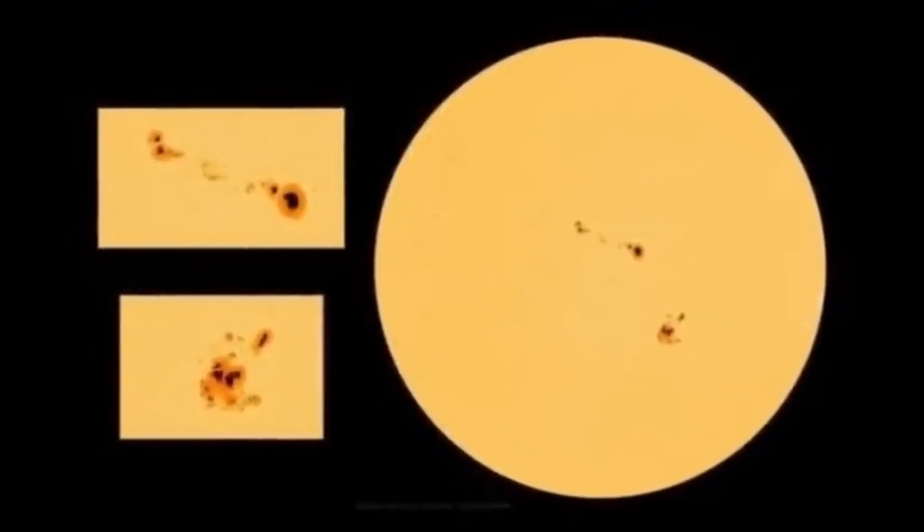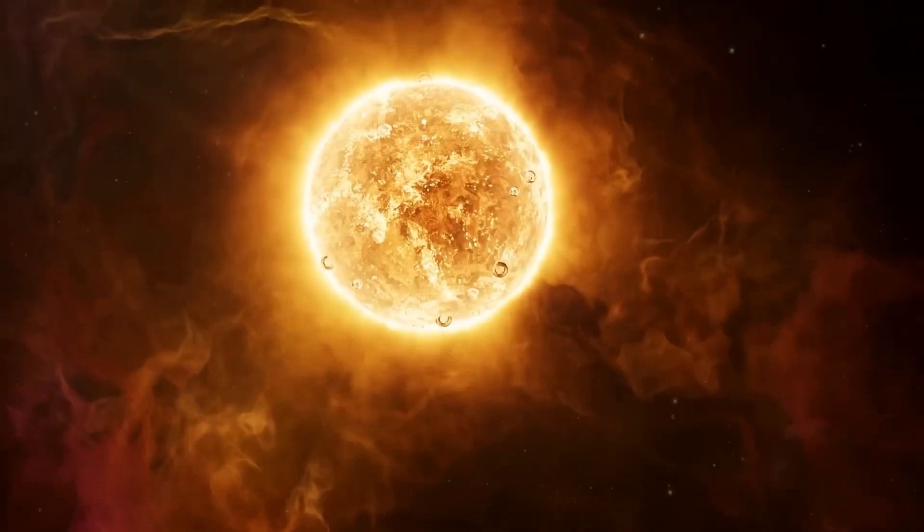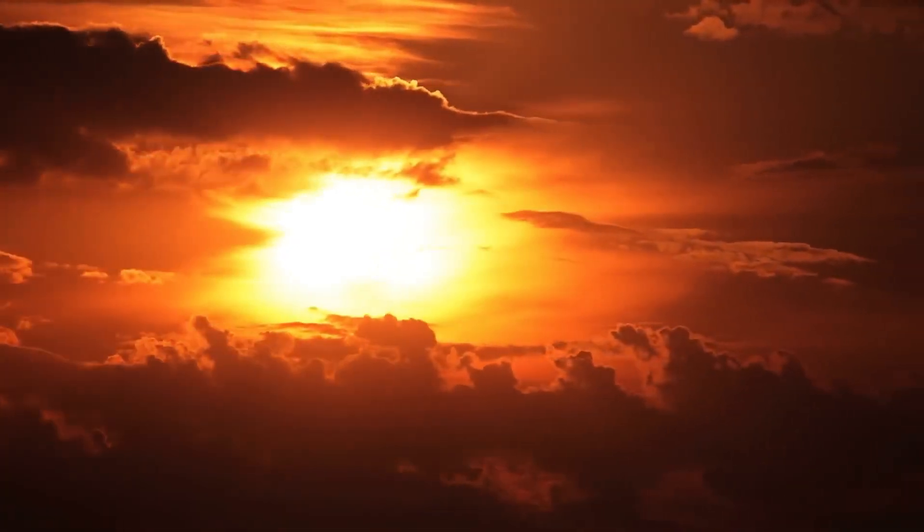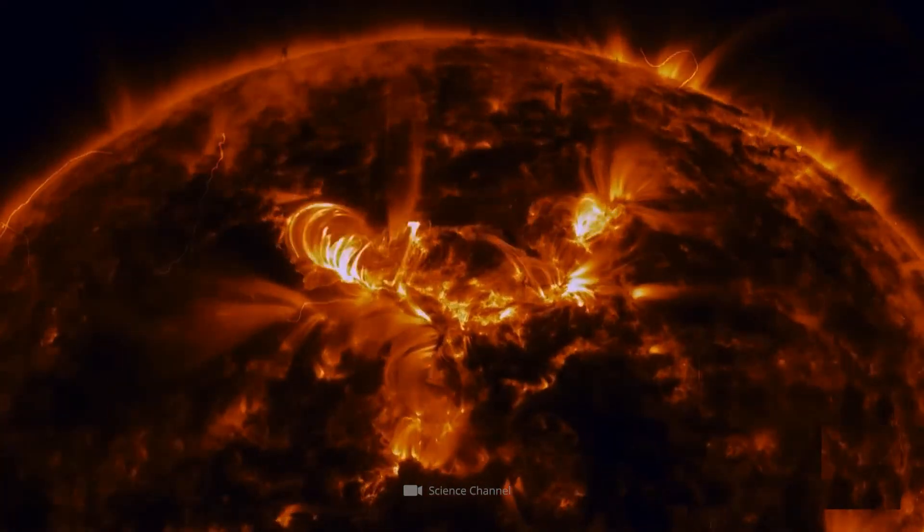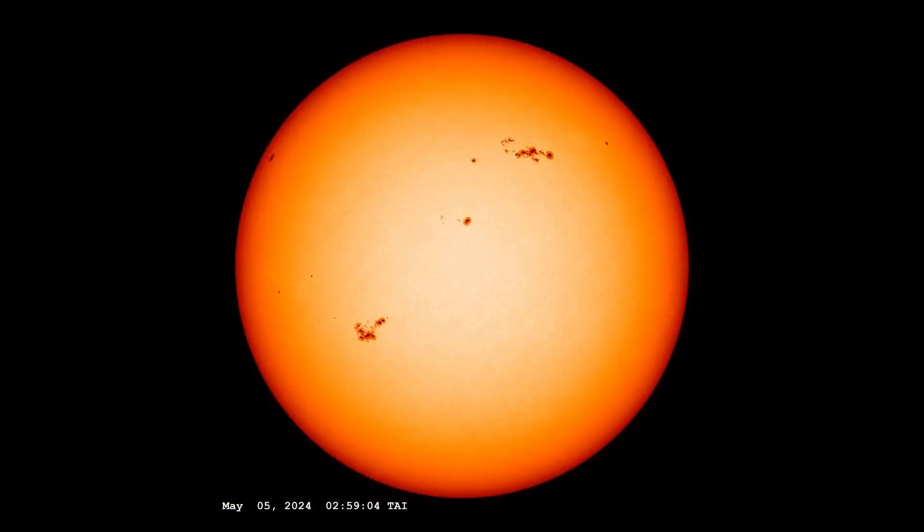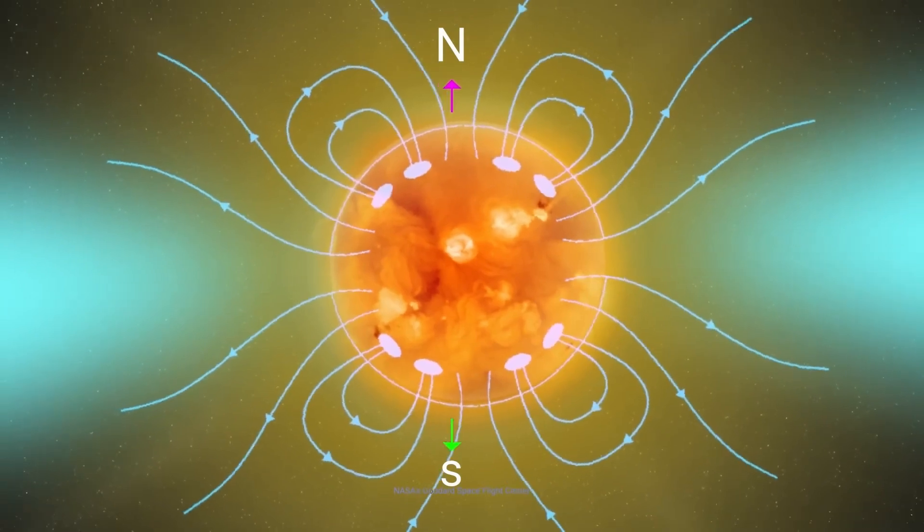This video is sponsored by Mova Globes. On May 1st, 2024, a seemingly ordinary sunspot appeared on the eastern edge of the sun. At first it was nothing unusual, just one of the many sunspots that come and go. But as the days passed, this sunspot grew at an astonishing rate, swelling to a size 17 times larger than Earth itself.